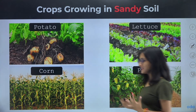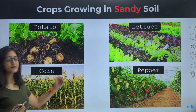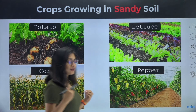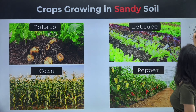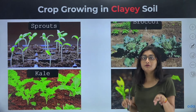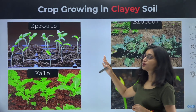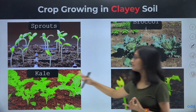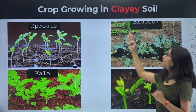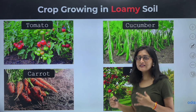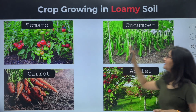Looking at the crops that grow in each soil type — in sandy soil, the major examples are potato, lettuce, corn, and pepper. These crops nurture very well in sandy soil. In clayey soil, a number of vegetables grow well, including sprouts, broccoli, kale, and beans. In loamy soil, the examples are tomato, cucumber, carrot, and apple — these all grow best in loamy soil.